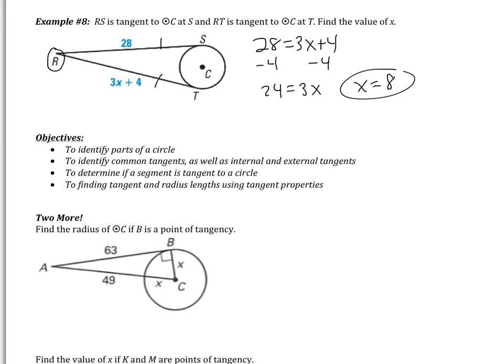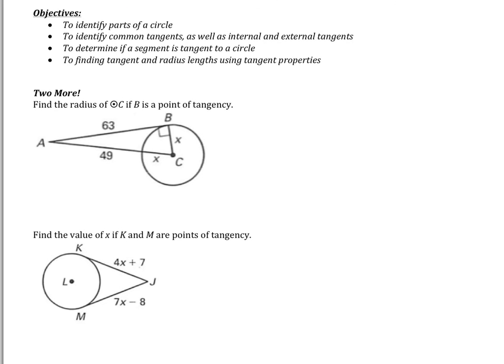That was the last theorem for this video. We covered four objectives: identifying parts of circles (secant, tangent, radius, chord); identifying internal and external common tangents; determining if a segment is tangent using the Pythagorean theorem; and finding tangent and radius lengths using tangent properties. Tomorrow in class we'll do the extra examples and classwork. If anything was unclear, write down your questions. See you tomorrow.